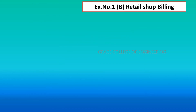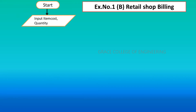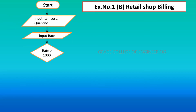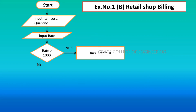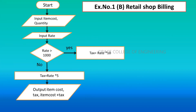The next exercise is retail shop billing. Start the program, then take inputs: item cost and quantity. Next, input the rate of the item. Then check the condition: if the rate is greater than 1000. If yes, tax = rate × 10. If no, tax = rate × 5. The output will display item cost, tax, and the total (item cost + tax). Then stop the program. This is the flowchart for retail shop billing.